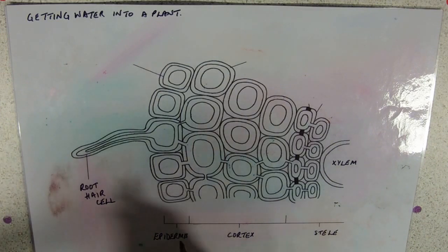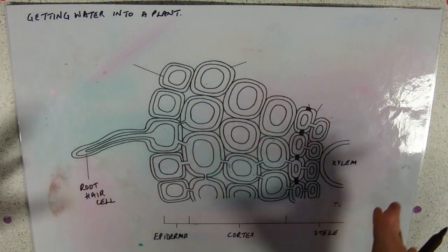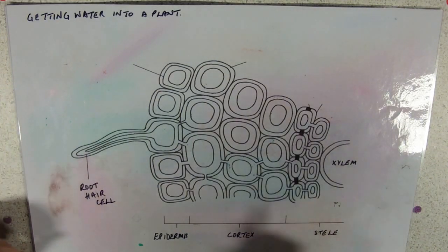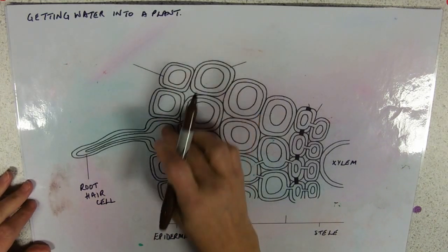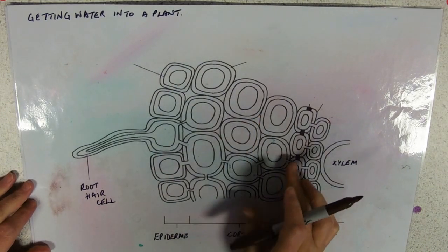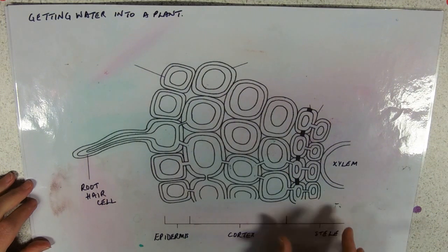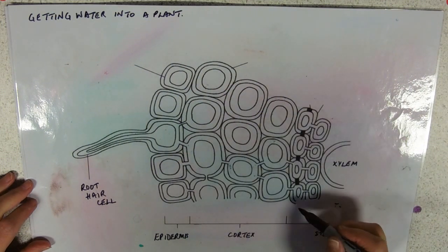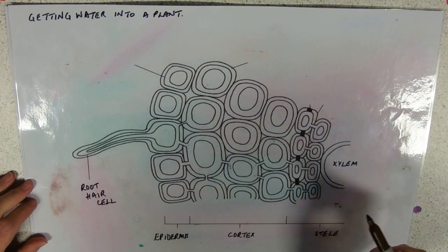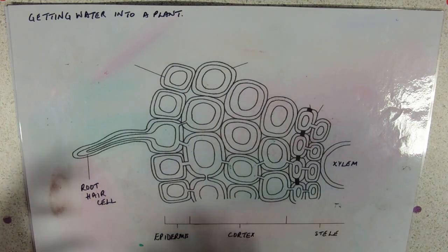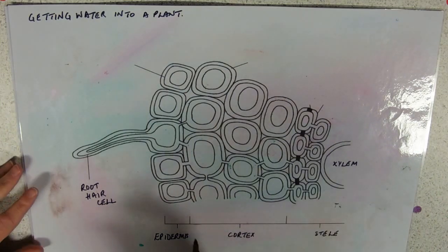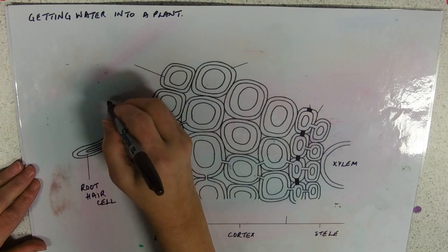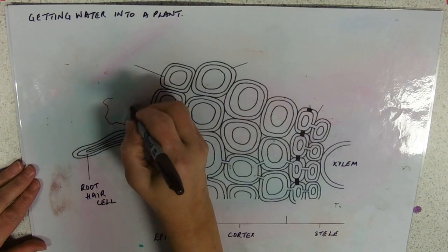So we're looking here at a sort of big blow up of that root with the epidermis, the cortex between the epidermis and the stele with the endodermis, pericycle, and we're just looking at the xylem because we're only concerned with water at the moment.